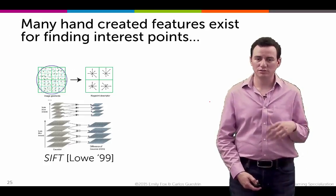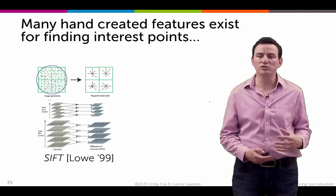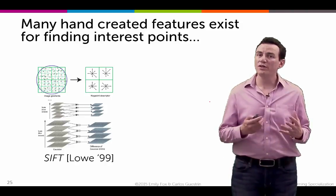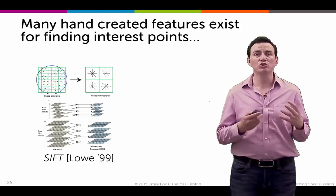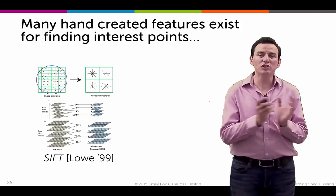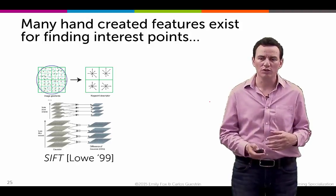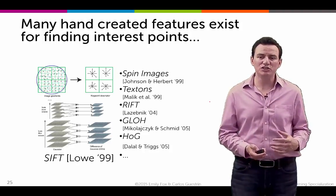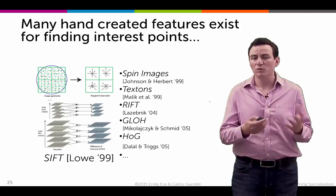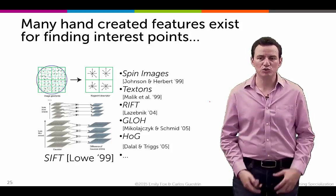For years, these types of local detectors or local features were built by hand. A very popular one was called SIFT features, and this really transformed computer vision because they were quite applicable and quite cool. And then there were many others that improved their accuracy.